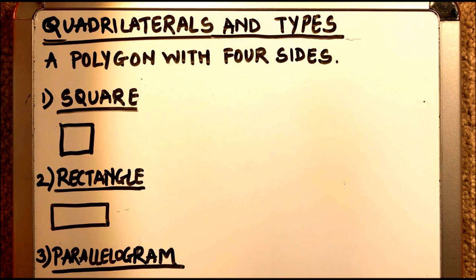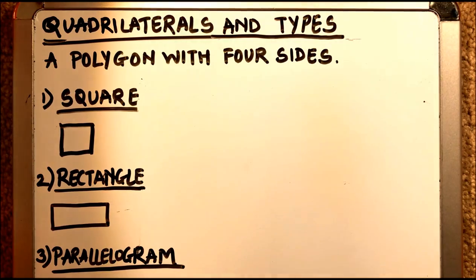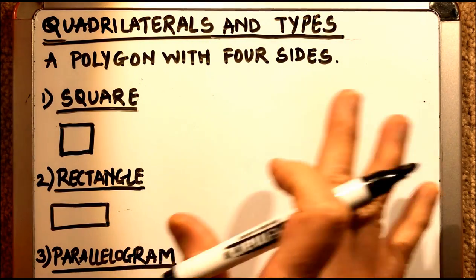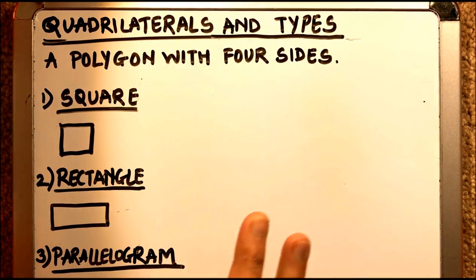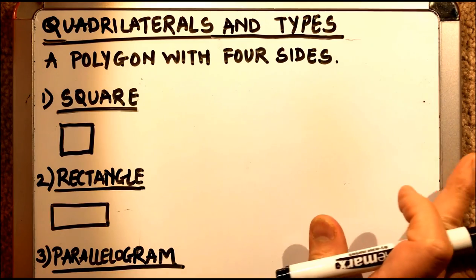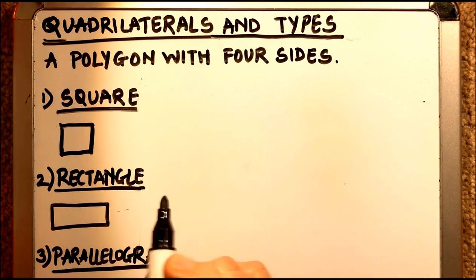Hello viewers. In this video we will discuss quadrilaterals and the types of quadrilaterals. A quadrilateral is a polygon with four sides, so any four-sided closed figure is a quadrilateral. Now we have types of quadrilaterals.